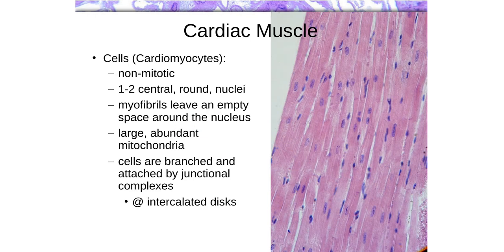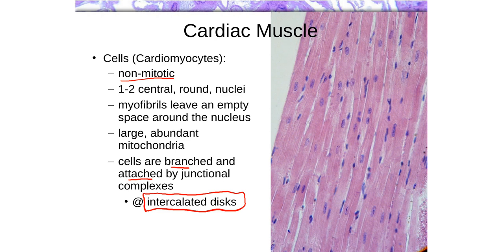Cardiac muscle fibers are non-mitotic — again, they are full of protein and doing mitosis would require breaking down all that protein. They are branched and attached to one another, communicating through junctional complexes at regions called intercalated discs, which allow the cells to coordinate their contractions. Mitosis would also require detaching all those connections, disrupting that communication. The cardiomyocytes are nowhere near as long as skeletal muscle fibers, but they are still relatively large.